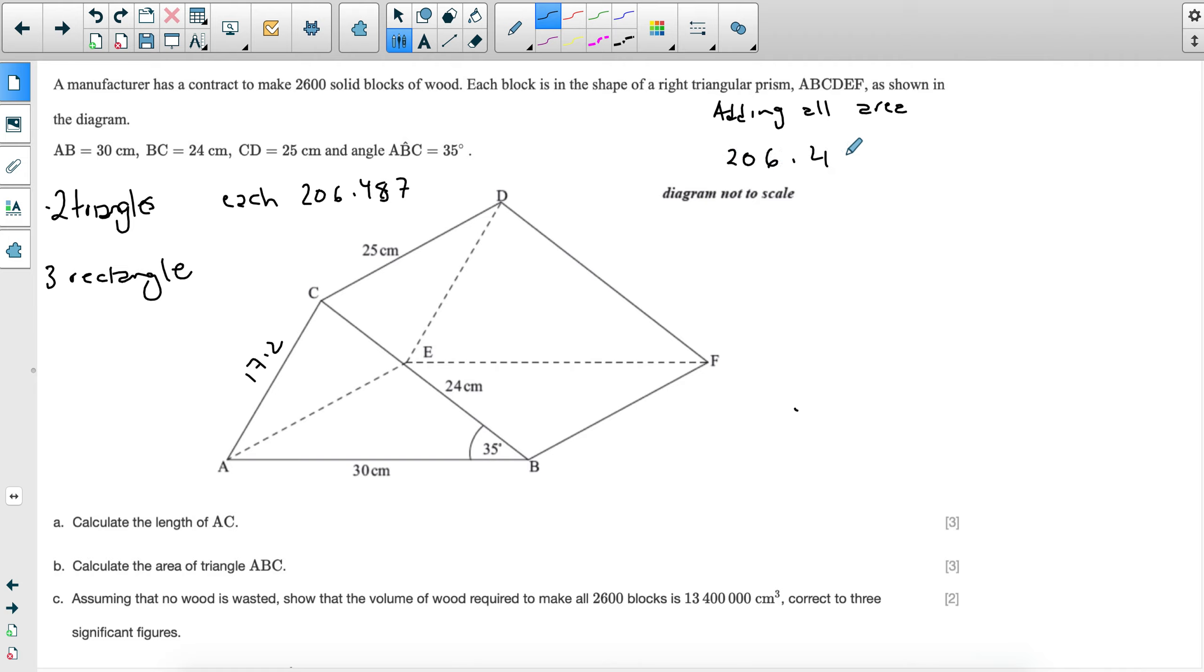So first we have 206.487 times two. And then we have the area of this rectangle, which is 25 times 24. And then we have the area of the rectangle at the back, which is 25 times 17.2. And again, you can use the unrounded form of this because we found it in part A. So you have 25 times 17.2168. We're adding a couple more decimal places. And then the last one would be the rectangle at the bottom, which is 30 and then multiplied by 25. So this is the 25 length. So 30 multiplied by 25.